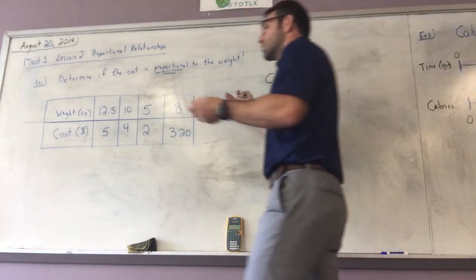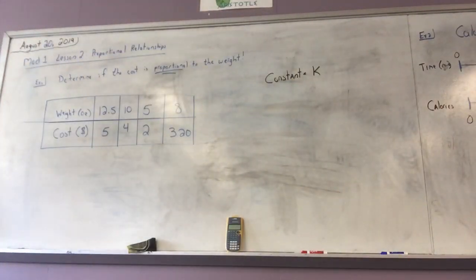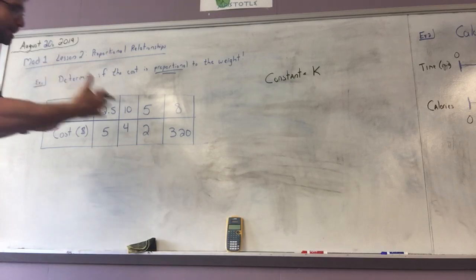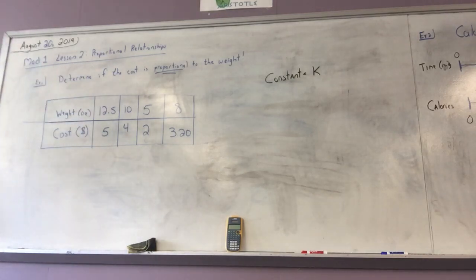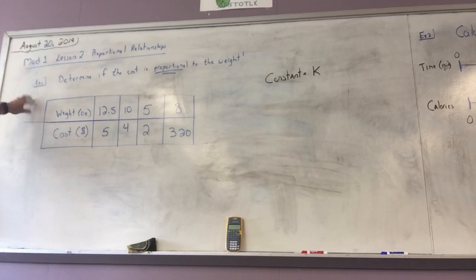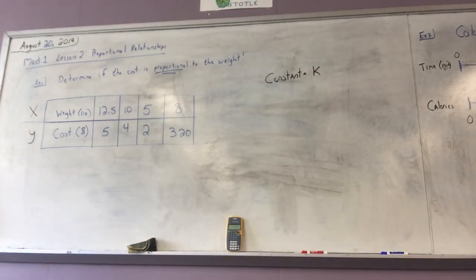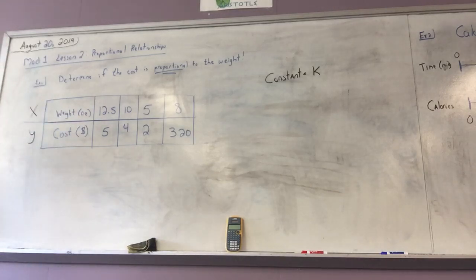Now we come to this table of values. We're going to determine if the cost is proportional to the weight. Before we even start, every time I look at a table of values I need to identify what my x value is and what my y value is, because we are leading into graphing. In a table, my top row will always be my x values, and my bottom row will be my y values.